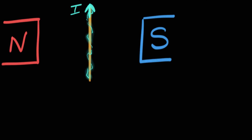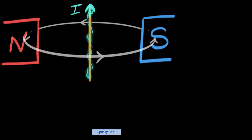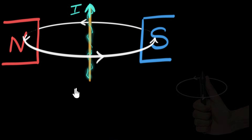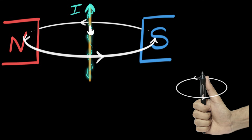We've seen before that the magnetic field due to a current carrying wire runs in circles around it. The direction is given by the right hand thumb rule, where the thumb represents the direction of the current and the four fingers represent the direction of the magnetic field. So the magnetic field runs like this.